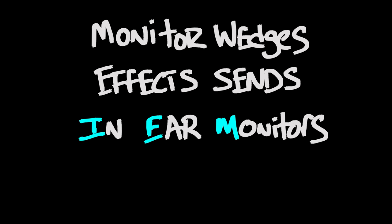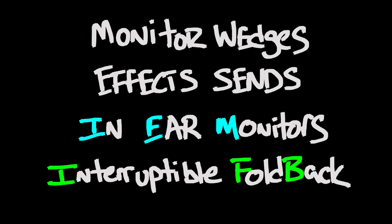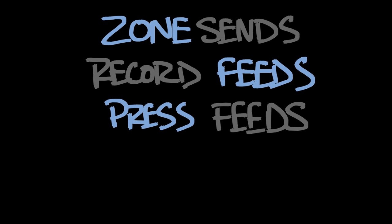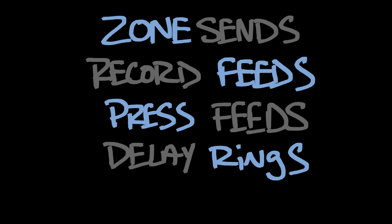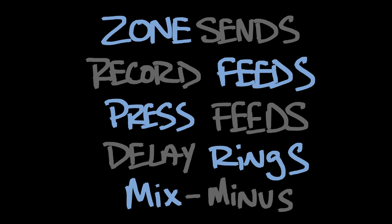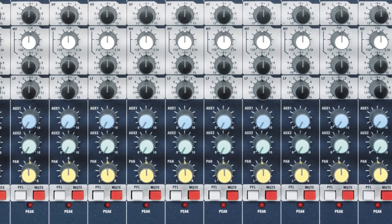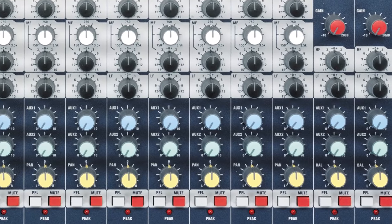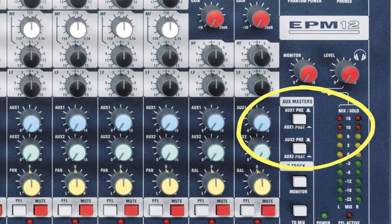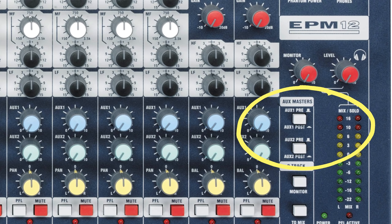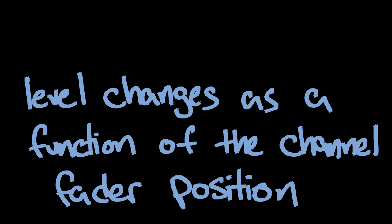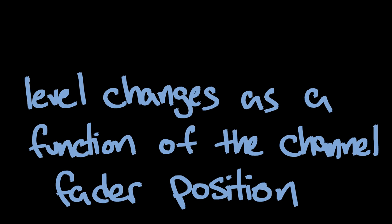We use aux sends for all sorts of different tasks, some of which include monitor mixes for wedges, sends to effects units, in-ear monitor mixes, IFB or interruptible foldback sends for broadcast use, zone sends, record feeds, feeds to the press, delayed zone or delay ring sends, and mix minuses for teleconferencing — anything else that needs a dedicated mix. Typically you will at least have the option of selecting either a pre or post-fade send. This most fundamental choice allows you to choose between a send that acts independently of the channel's fader (pre-fade) or one that tracks and corresponds to the channel's fader position (post-fade).